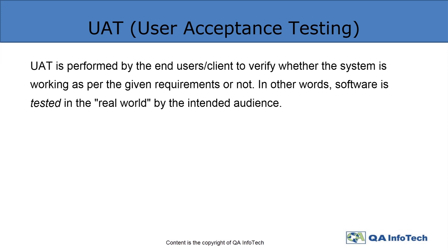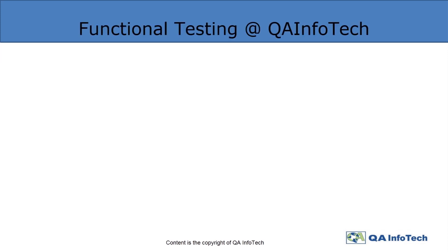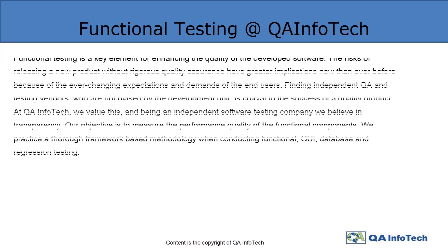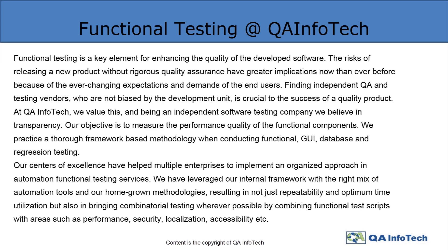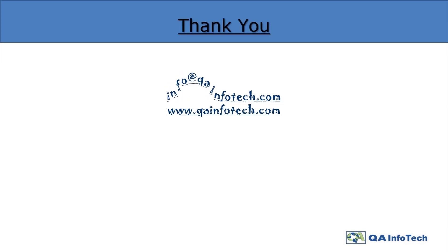Fourth, UAT, which is user acceptance testing. UAT is performed by the end user or client to verify whether the system is working as per the given requirements or not. In other words, the software is tested in the real world by the intended audience. For more information, please visit our website at www.qainfotech.com. Thanks for watching our video tutorial — stay tuned for more videos.